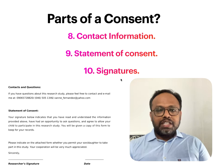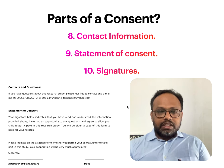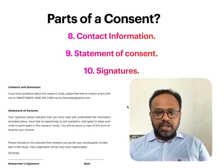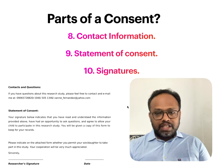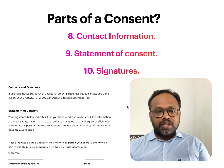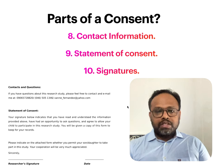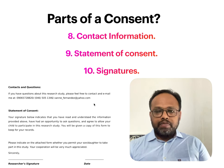The research participant will give their valid signature with the date. This consent form has the 10 parts mentioned. We also need to provide a patient information sheet, which is different from the consent form. The consent form is for the researcher, and the patient information sheet is for the patient, provided in the language comfortable for the participant, containing all contact details and other research information.